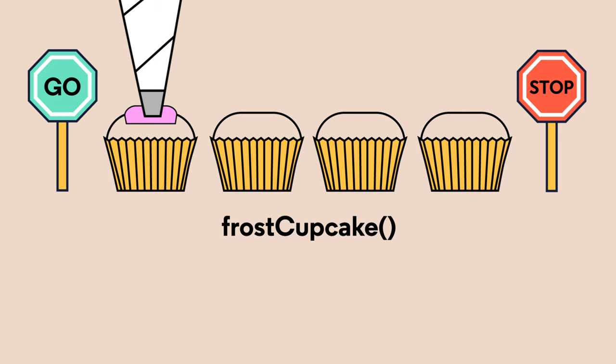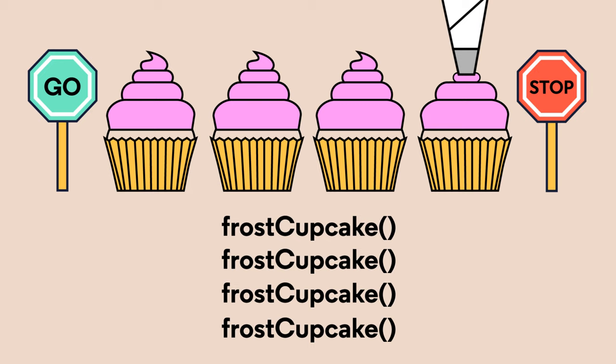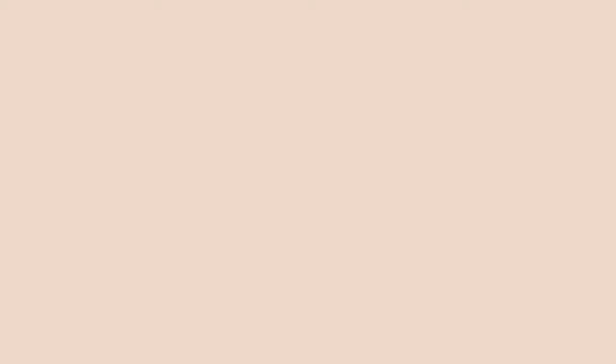This condition is checked every round, and the loop will continue to run until the condition is reached. If our goal was to frost four cupcakes, the loop's stopping condition would specify to continue to frost cupcakes until four cupcakes have been frosted. So our loop would run frost cupcakes four times, giving us four fully frosted cupcakes. Loops allow us to tell the computer where to start and provide a condition upon which to stop, all in a few easy-to-read lines of code.